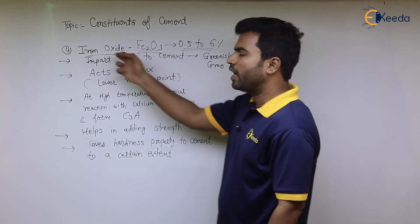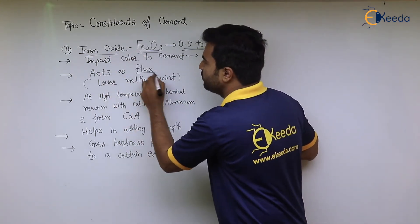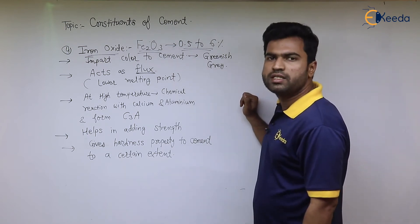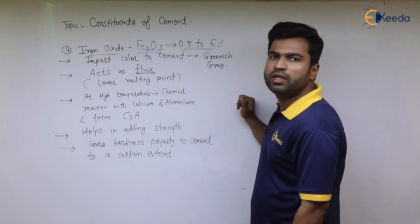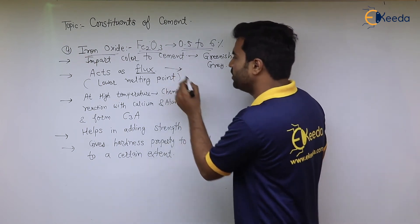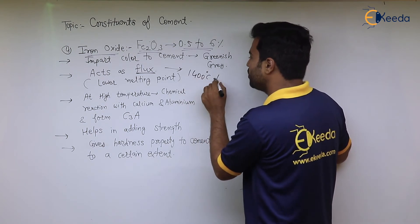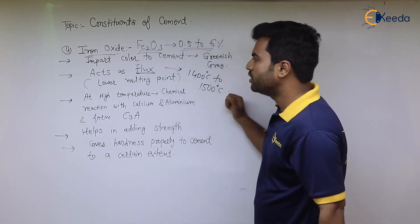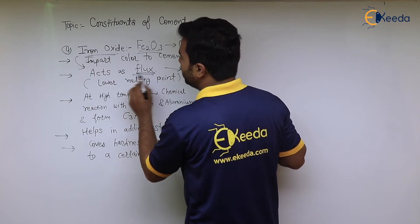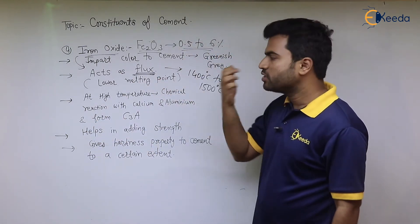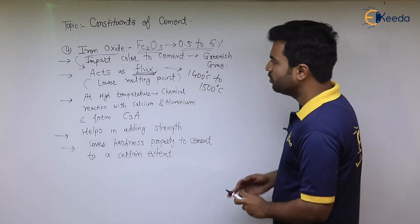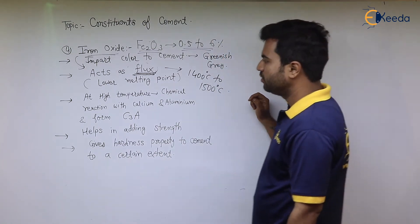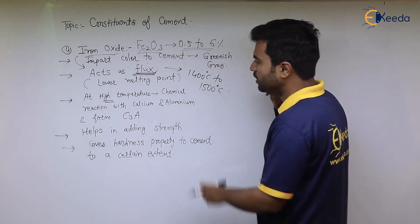Iron oxide also acts as a flux. During the burning of cement constituents — which are burned at a temperature of 1400 to 1500 degrees Celsius — there are chances of overburning due to this high temperature. Iron oxide, acting as a flux, reduces the melting point of the various constituents of cement, thereby preventing overburning.